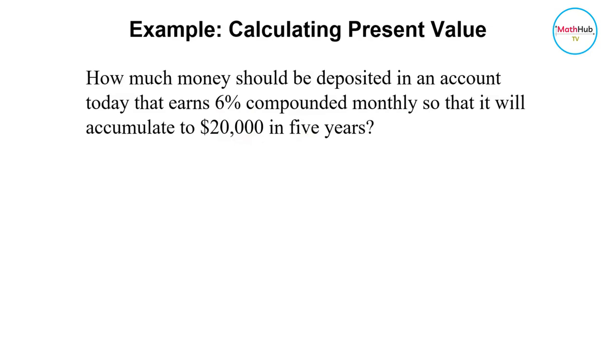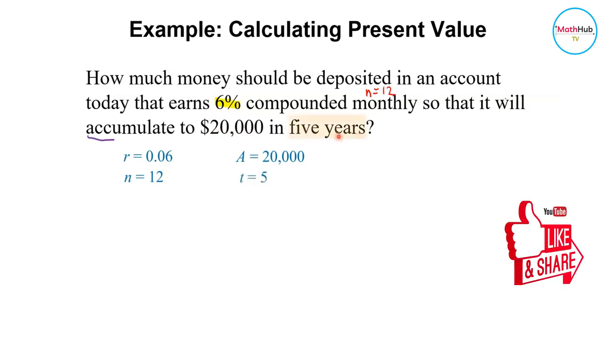Let's look at the given. This 6% here is the rate and that is equivalent to 0.06. This is compounded monthly, so n equals 12. This $20,000 says it will accumulate to $20,000, so that means $20,000 is the amount in the future. So that is your A. And then t equals 5 because you have 5 years here.